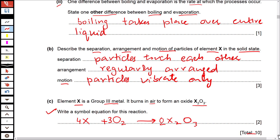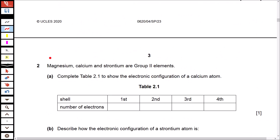Question 2: magnesium, calcium, and strontium are group 2 elements. Complete the table to show the electronic configuration of the calcium atom. Calcium is element number 20, so there are 20 electrons. Out of these, 2 electrons are in the first shell, 8 in the second, 8 in the third, and 2 electrons are in the fourth shell.